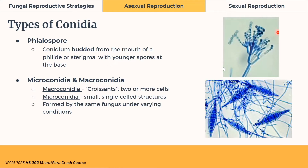The fifth type is the microconidia and macroconidia. Macroconidia look like croissants — they are large and composed of two or more cells. Microconidia are small and single cell. These are actually formed by the same fungus under varying conditions, so from the same specimen both can be present.